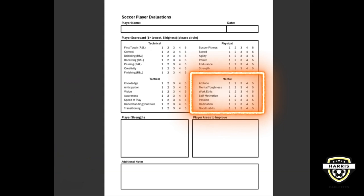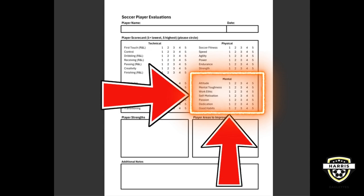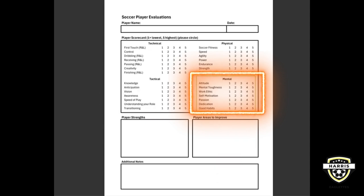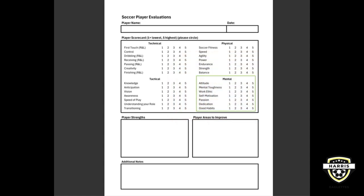The last thing we're going to talk about in terms of pillars of player development is the mental aspect. The mental aspect of player development involves these key areas here. We're going to go through each of them starting off with attitude and working our way down through good habits.